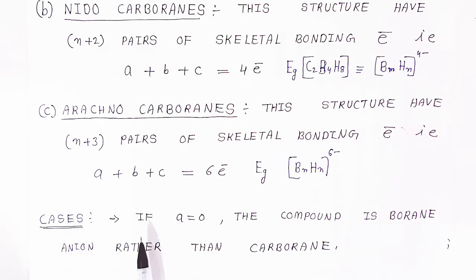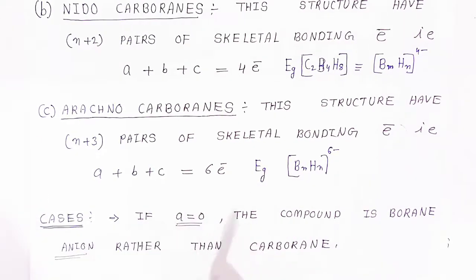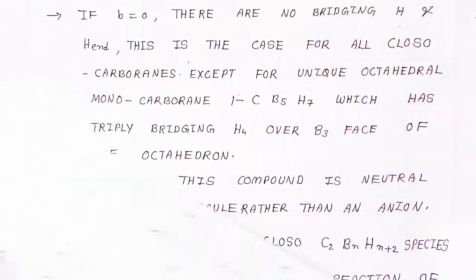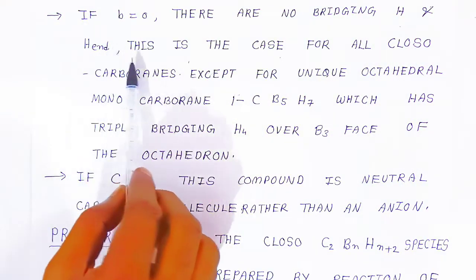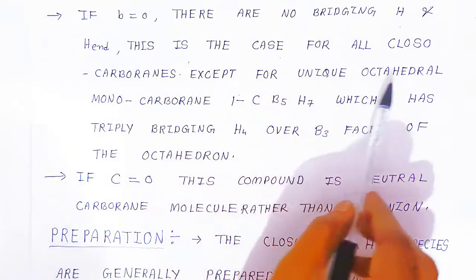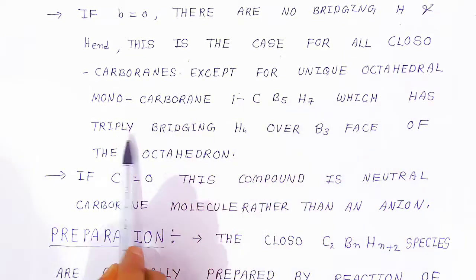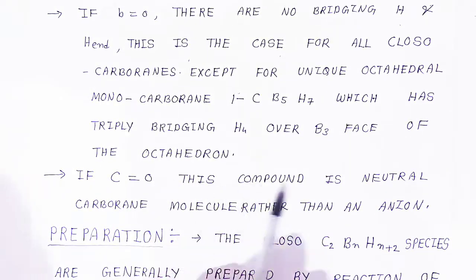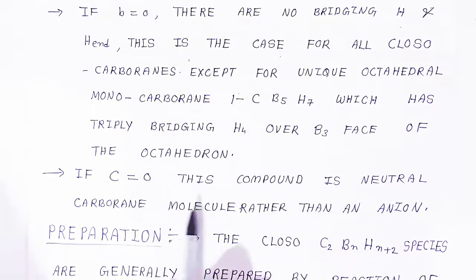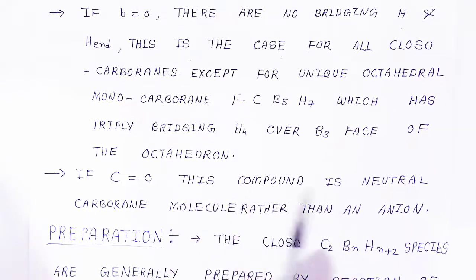In some cases, if A becomes 0, the compound is a boron anion rather than a carboborane. If B equals 0, there are no bridging hydrogen atoms — this is the case for all closo-carboboranes except the unique octahedral monocarboboron 1-CB5H7, which has triple-E bridging H over the boron 3-faces of the octahedron. If C equals 0, the compound is a neutral carboborane molecule rather than an anion.